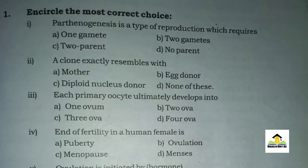...C: diploid nucleus donor, D: none of these. The right answer for this MCQ is C: diploid nucleus donor. MCQ number three: Each primary oocyte ultimately develops into — A: 1 ovum, B: 2 ova, C: 3 ova, D: 4 ova.